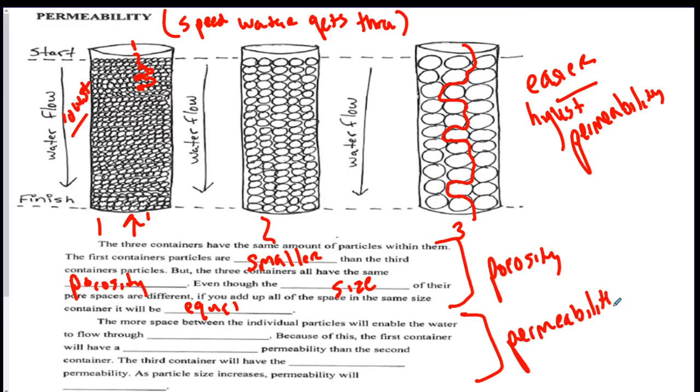How easy it is for the water to get through these, which we already talked about. The more space between the particles will enable the water to flow through faster. Because of this, the first container will have a lower permeability than the second one. The third container will have the highest permeability. As particle size goes up, permeability will increase. So if you're confused on this right now, it's because you don't understand the vocabulary. You need to know the difference between porosity and permeability. You need to know what permeability is. It's how easy or fast it is for water to get through it. So you could say, as particle size increases, the speed at which the water will be able to flow through will increase. Because there's more space.